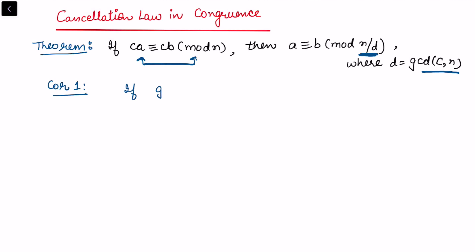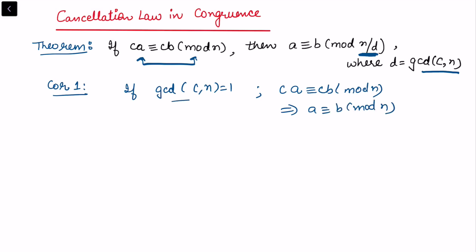From here we can have an obvious corollary: if the gcd of c and n is equal to 1, then we can automatically do the cancellation. This means ca congruent to cb modulo n implies a is congruent to b modulo n. This is very useful whenever gcd(c, n) = 1. But if the gcd is not equal to 1, we need to reduce the modulus as well.